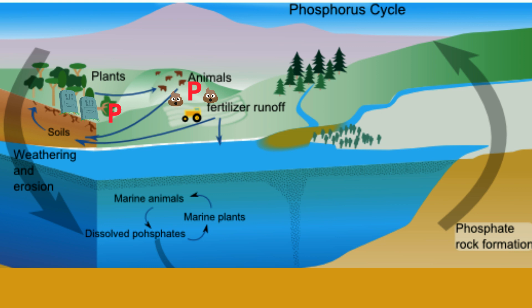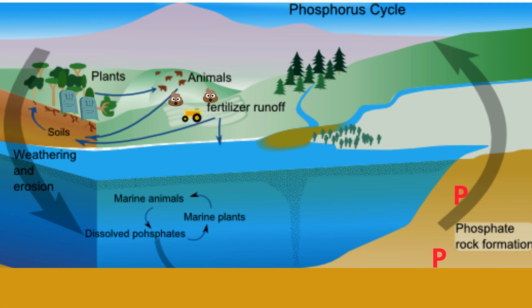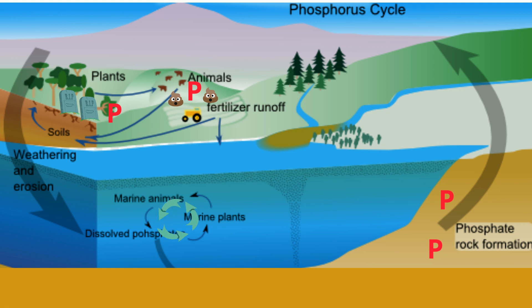Step 4: Sediment to Rocks. Some of the phosphorus gets buried in sediment which, over time, becomes rocks and the cycle continues. Some of the phosphorus in the soil also gets washed to the ocean where a similar process takes place.